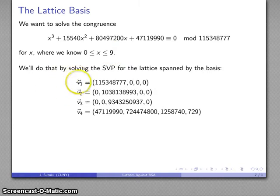Now I have a lattice that's going to be spanned by this set of four vectors. The key here is that every point in this lattice corresponds to an equation associated with this particular congruence. And someplace in this lattice is an equation whose solution will also be the solution to this.